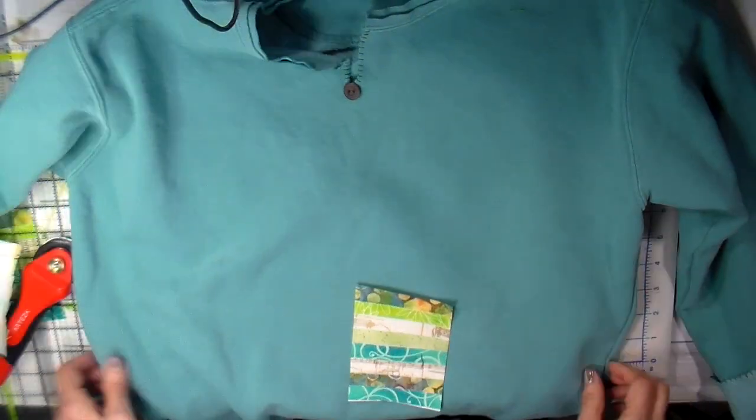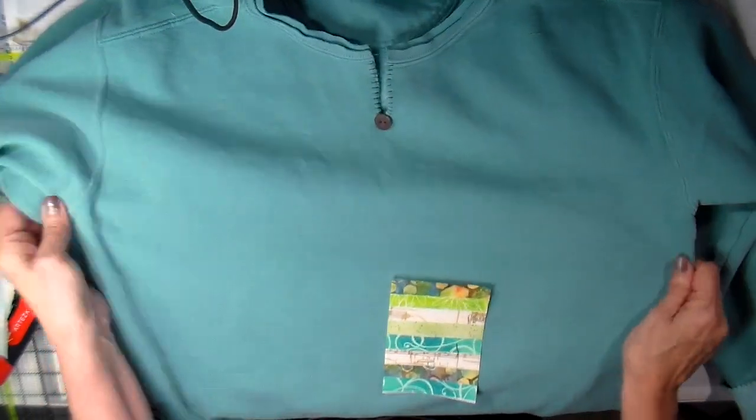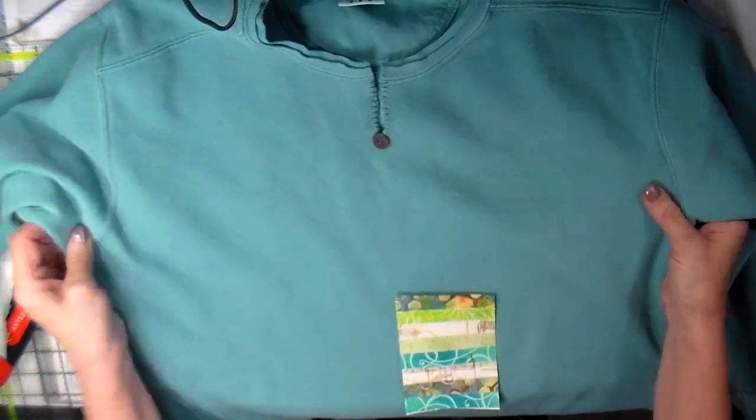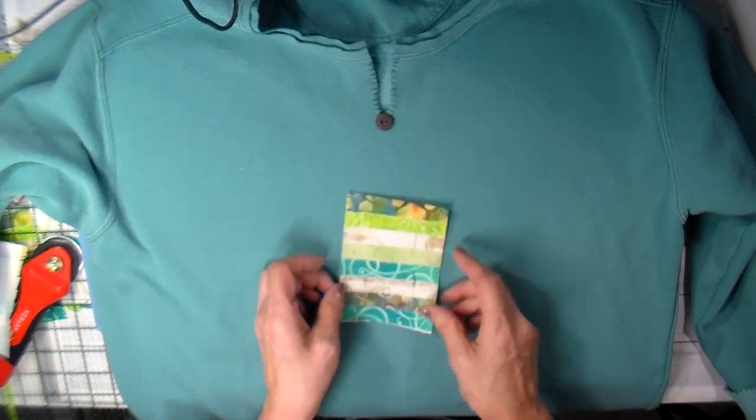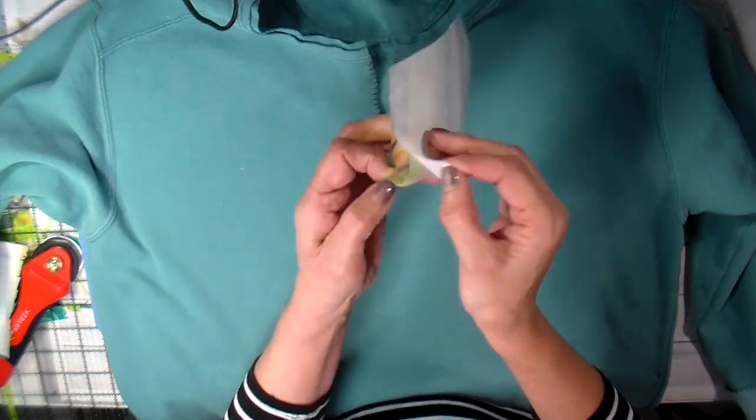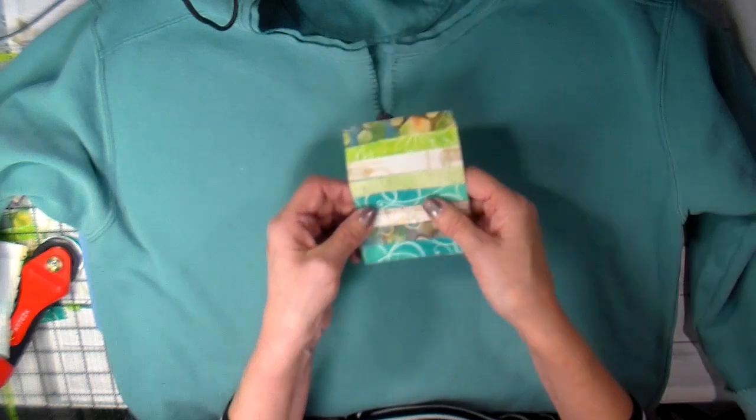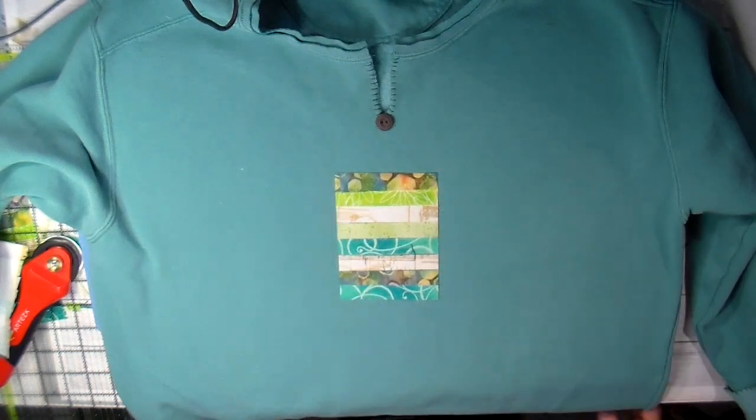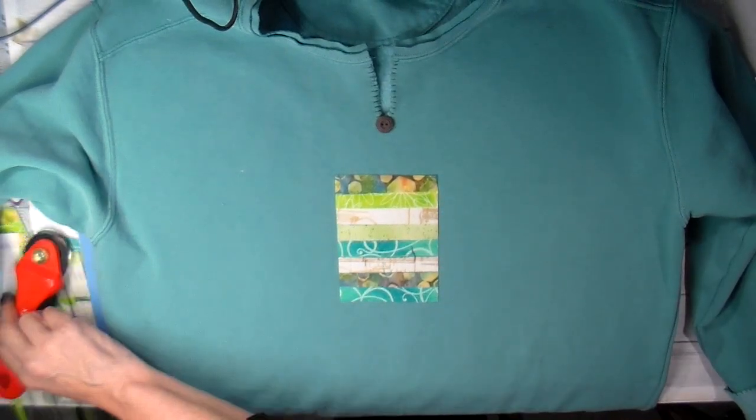Now it's on to getting my applique ironed onto my sweatshirt. Figuring out where I wanted. And this just peels right off. And now I have a scrappy applique ready to adhere to my shirt.